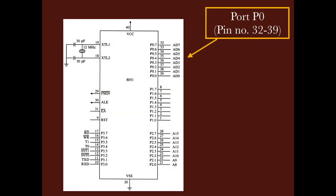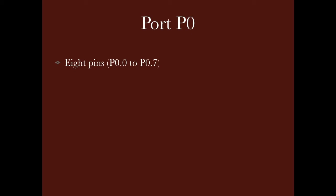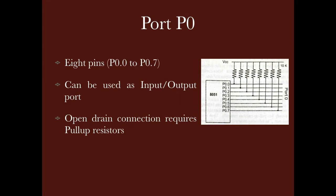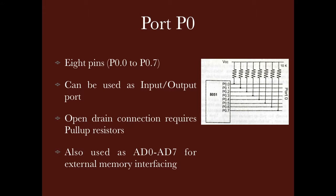Now we will discuss port P0. Port P0 is from pin 32 to 39. Port P0 is an 8-bit port and we represent it from P0.0 to P0.7. We can use it as an input-output port. In port P0, there is an open drain connection, which means we need to put pull-up resistors of 10k, with the other end connected to VCC. Port P0 is also used when we interface external memory, as a multiplexed address data line, AD0 to AD7.